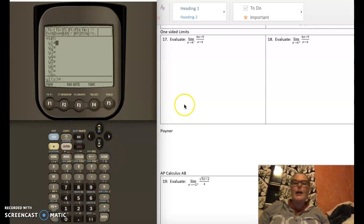I can see that the 4x minus 9 over x minus 4, I'm using it twice, so I might as well get it in here. Set of parentheses for the numerator, 4x minus 9, divided by a set of parentheses for the denominator, x minus 4, end parenthesis, enter.